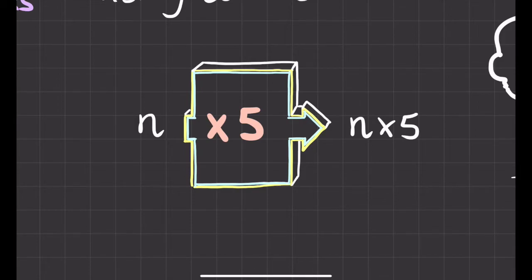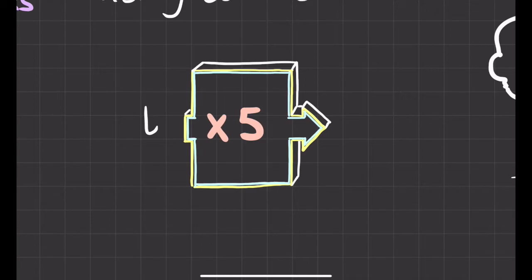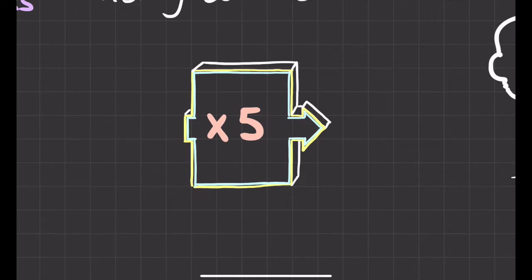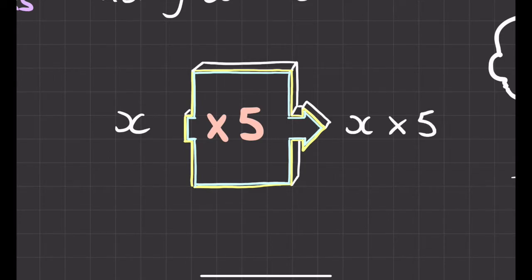I could put in other letters too. Let's put in the letter L — put that into my function machine, and the function machine says: I've got a number here, I'm not sure what it is, it's called L, and we're going to times it by five. Sometimes we use the letter X in maths, so the function machine takes the number X, whatever it represents, and does X times five. But there's a bit of a problem here, because X and the multiply symbol look very similar.